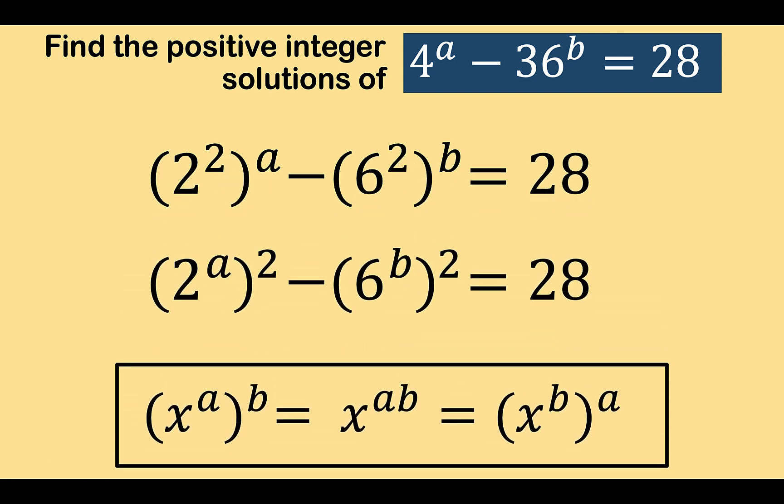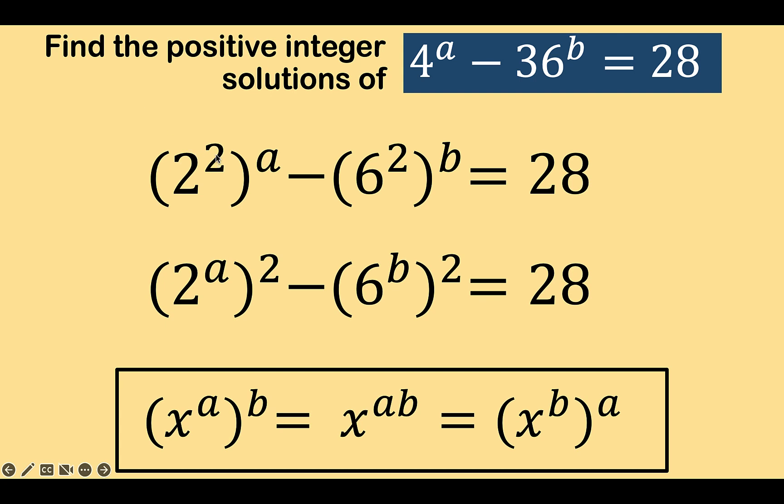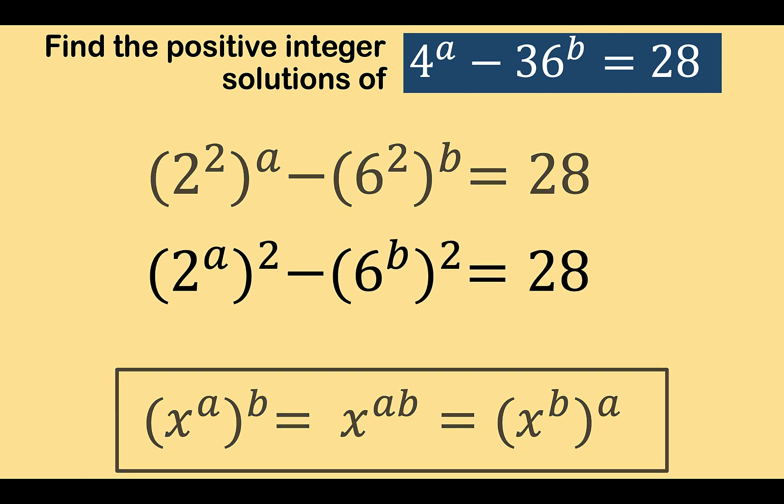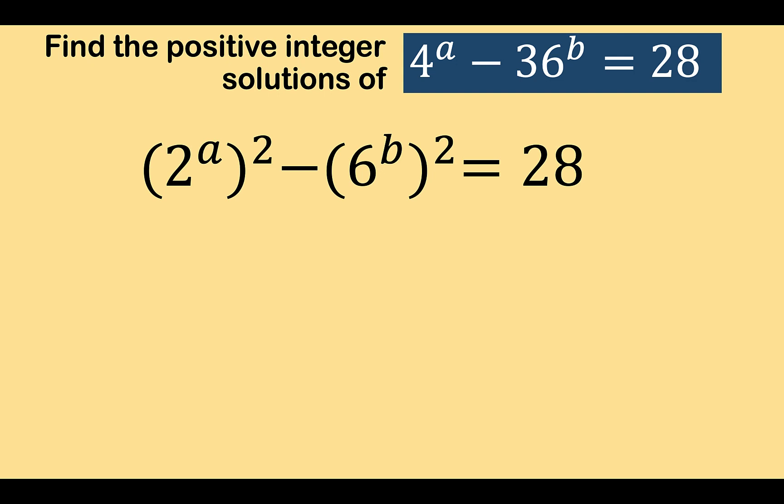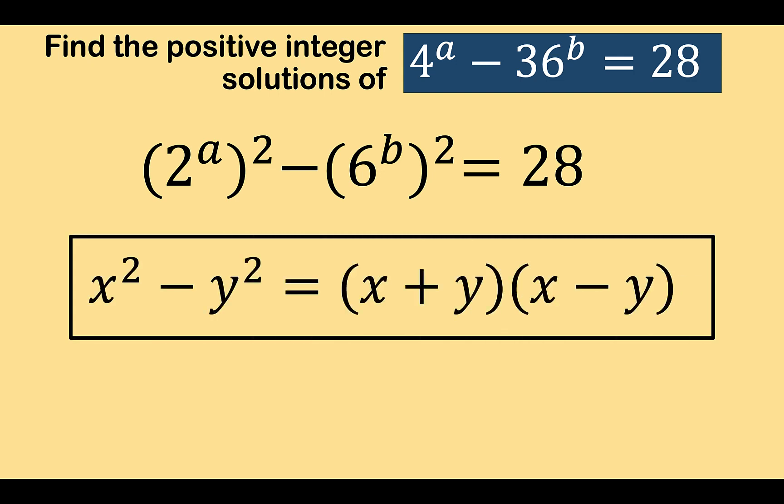This is what we have. We interchange the exponent inside and the exponent outside to get this expression, the same explanation for the second term. Now, since we have a difference of 2 squares here, we can now rewrite this applying this formula.